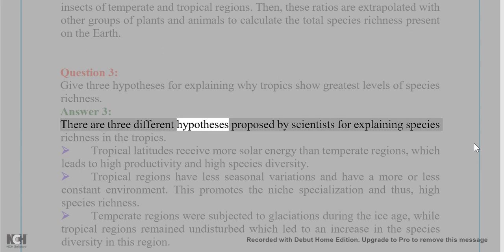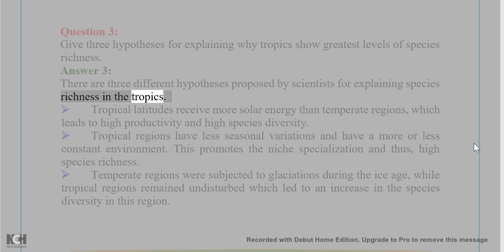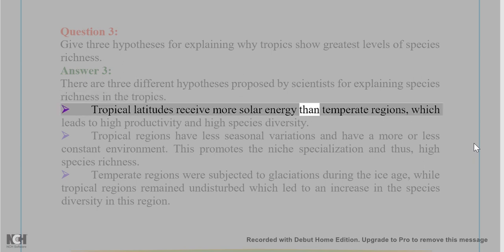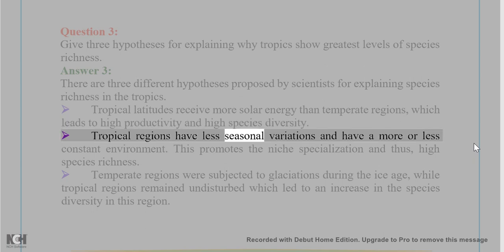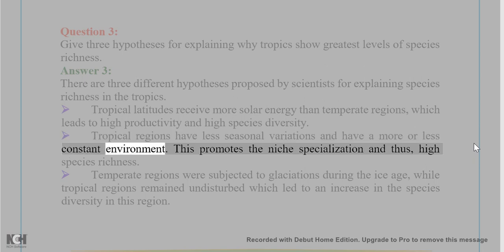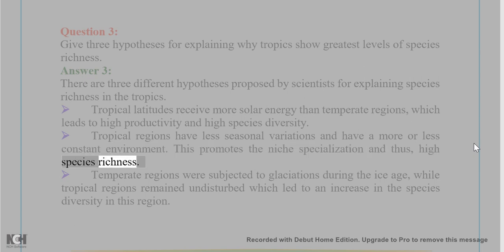Tropical latitudes receive more solar energy than temperate regions, which leads to high productivity and high species diversity. Tropical regions also have less seasonal variations and have a more or less constant environment. This promotes niche specialization and thus high species richness.